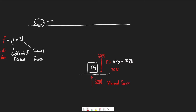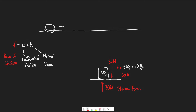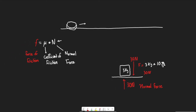The normal force, multiplied by the coefficient of friction, gives us the force of friction acting on an object. This is a special kind of friction called kinetic friction. Kinetic friction always acts in the opposing direction of motion — for a ball falling, friction acts upward; for an airplane flying forward, friction acts in the opposite direction.